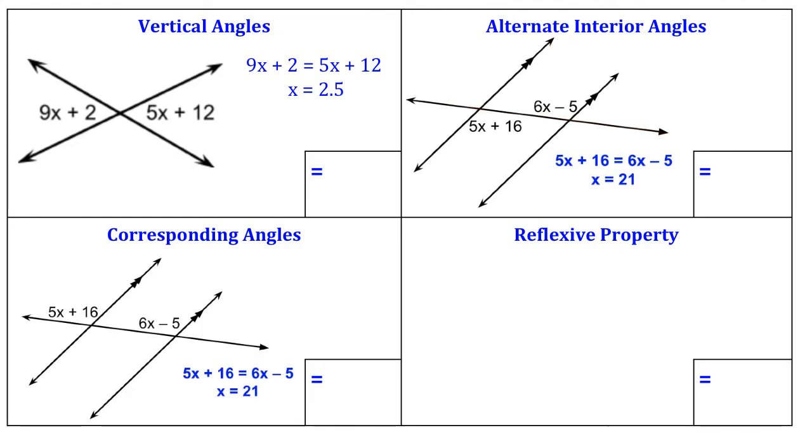Corresponding angles, again you have the two parallel lines. This time they're going to be on the same side of this transversal, and they're basically going to be a translation of each other. So they're going to be the same size again.